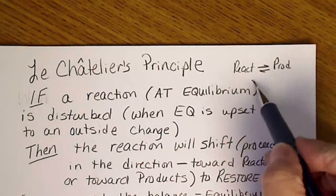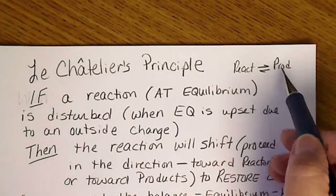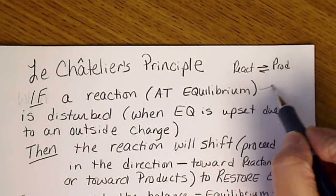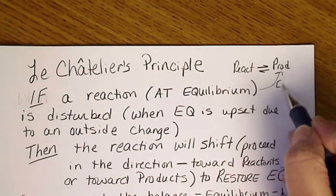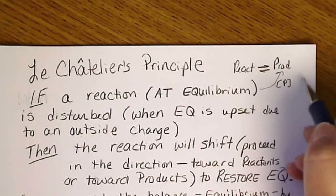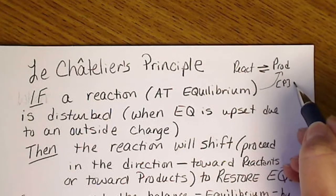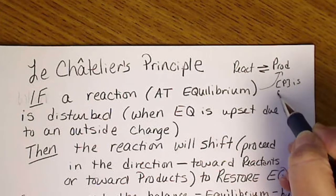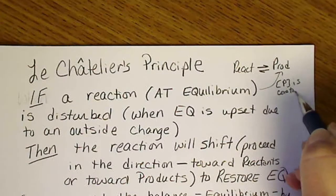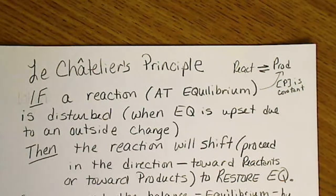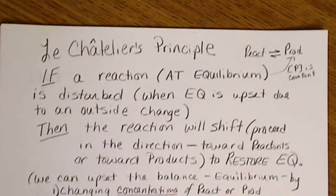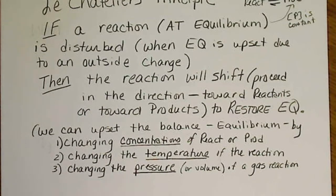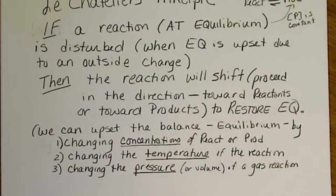Equilibrium is when these two rates are equal. So for the chemist, at equilibrium the concentration of our products has stopped changing — the concentration is constant, which means we stop making products, which means we stop making money. So upsetting equilibrium, from a chemist's point of view, is a good thing to do, as long as the shift is always toward products.